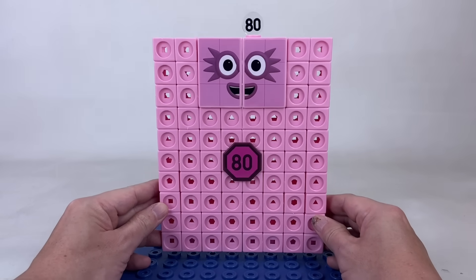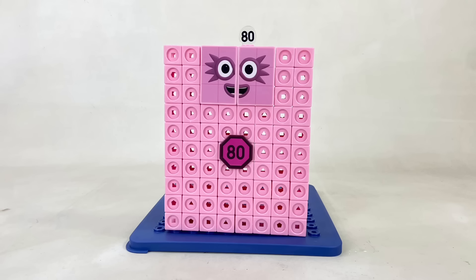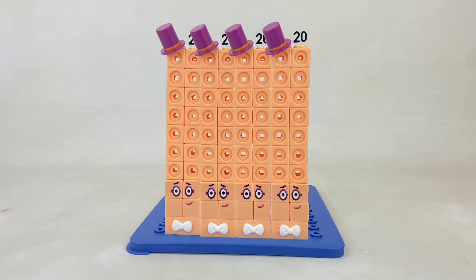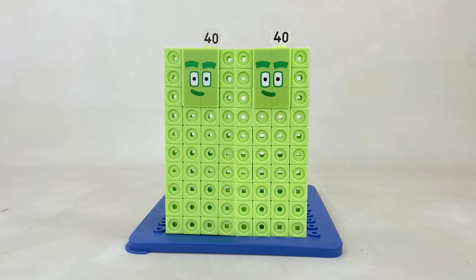Secretly, I'm 8 tens. We can make 80 with 8 tens, 4 twenties, or 2 forties.